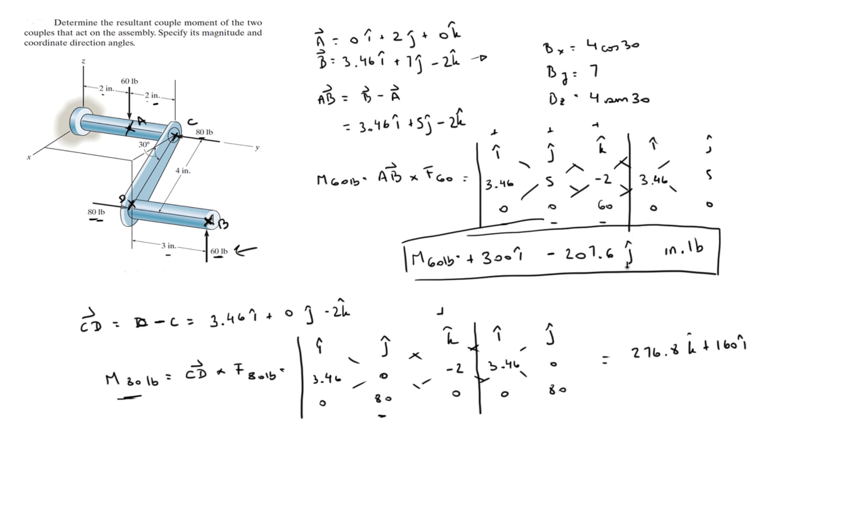So basically all you have to do is just add them together to get the resultant moment, which is equal to the moment at 60 plus the moment at 80. So when you add this Cartesian vector to this Cartesian vector, you're gonna get that the resultant vector is equal to 460 in the I, minus 207.6 in the J, that's a minus I swear, plus 276.8 in the K.